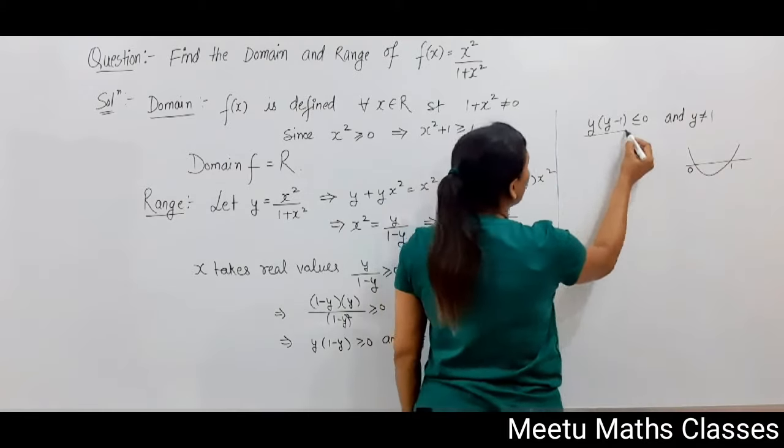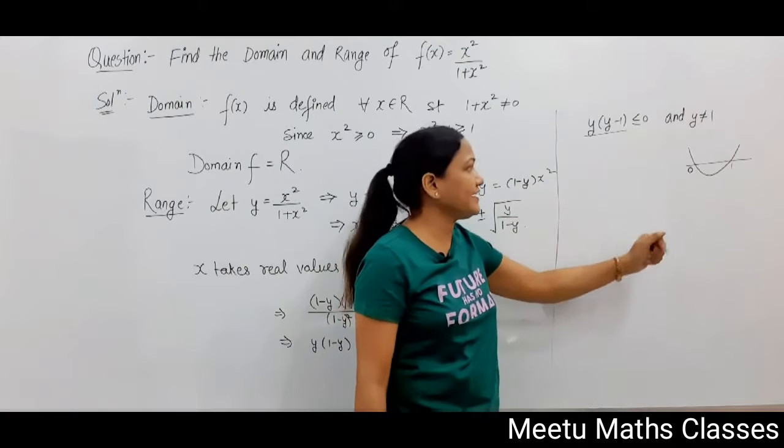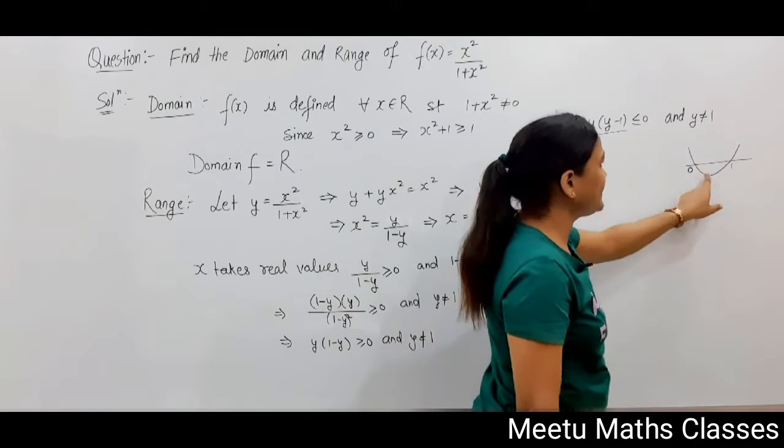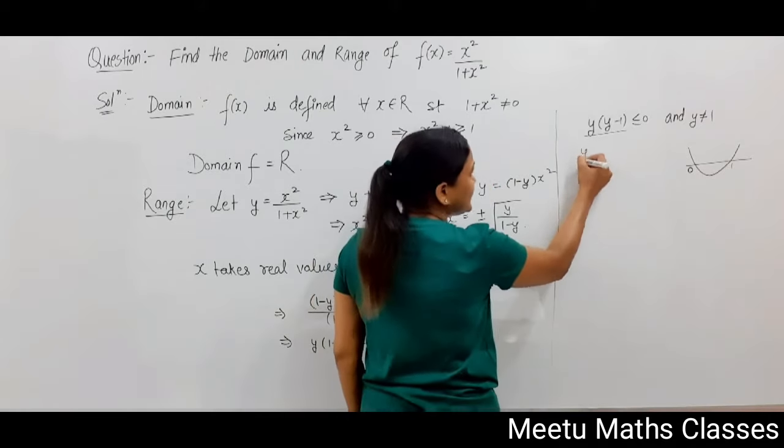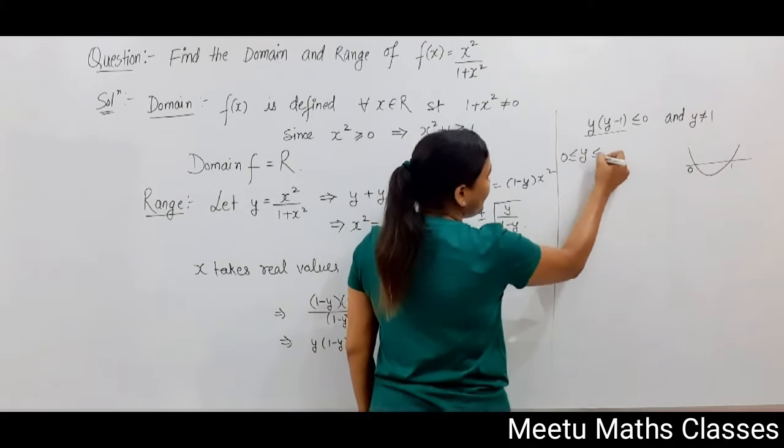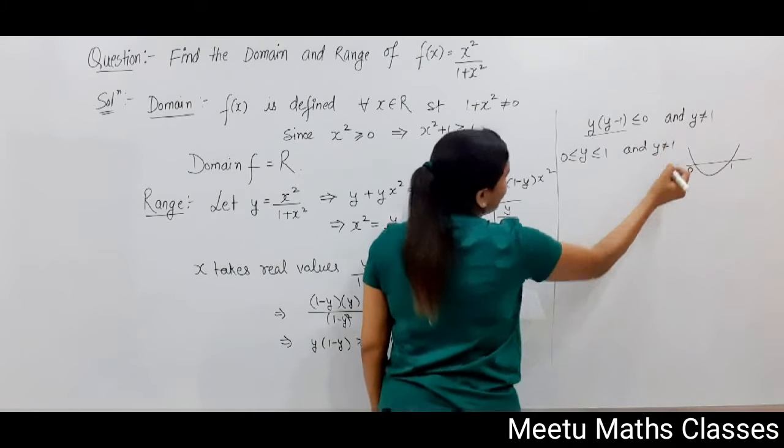You have to find those values of y for which your quadratic expression is negative. The quadratic expression is negative when y lies between 0 and 1, and y should not equal 1.